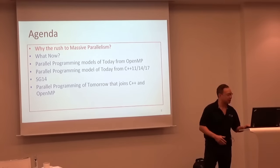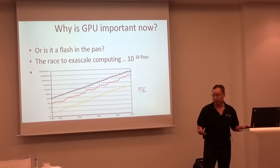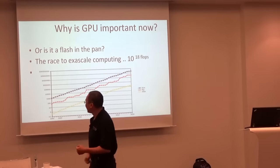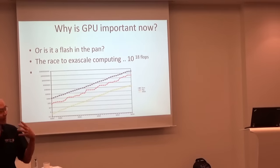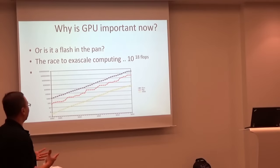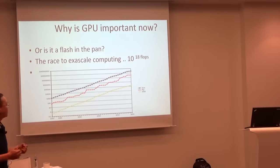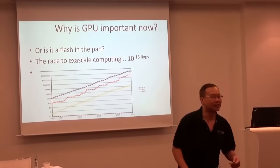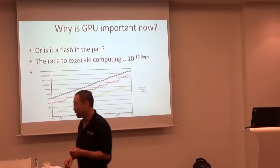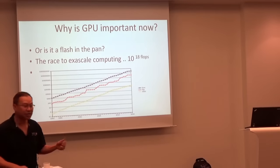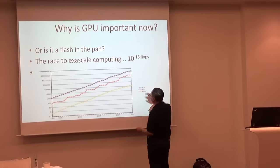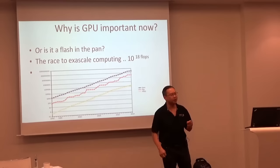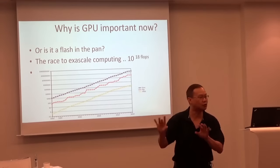One of the things SG14 is tasked with is developing a GPU accelerator model. I can already see what it's going to look like based on what we have from SG1 in terms of the parallelism TS and the concurrency TS. So what's the rush? The US Department of Energy has legislated that we must reach exascale computing by 2018. This is a graph of the top 500 supercomputers, and the most important one is this red one. Exascale means 10 to the 18 floating point operations per second.